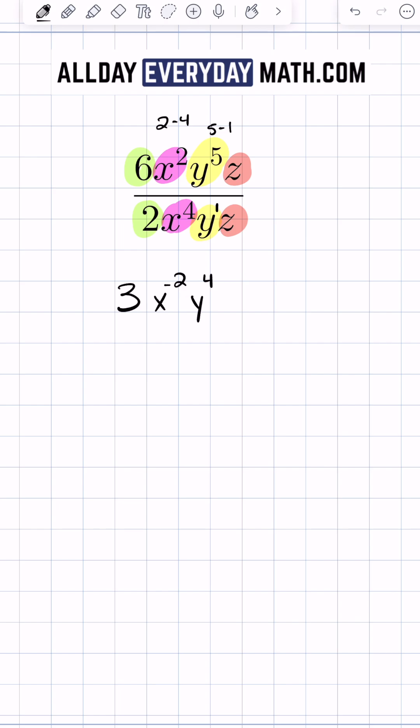So instead of 3x negative 2 y to the fourth, we can have 3y to the fourth over x squared. All I did was just move the x to the negative 2 to the denominator.